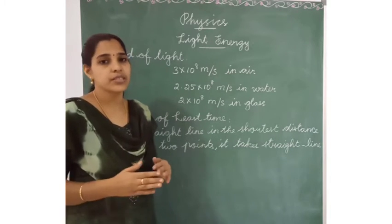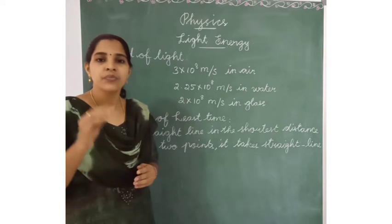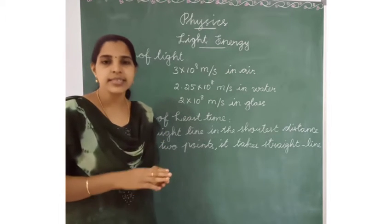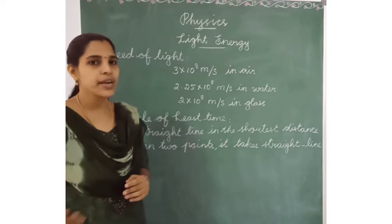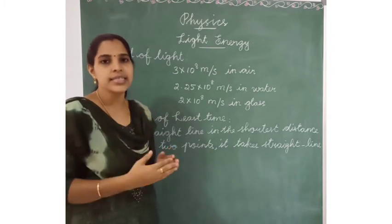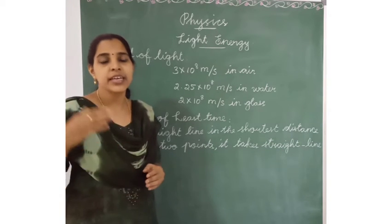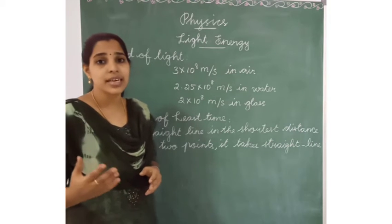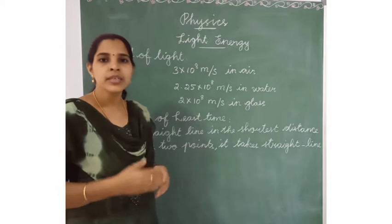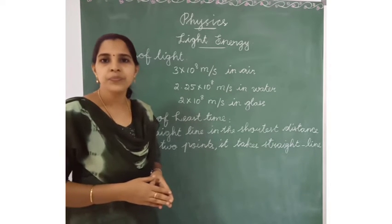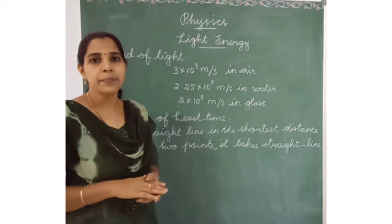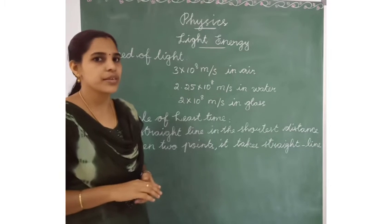In diffuse reflection, the law of reflection does not apply. What is the law of reflection? The first law of reflection is that the angle of incidence is equal to the angle of reflection. In regular reflection we consider the law of reflection, but not in diffuse reflection. The second law of reflection states that the incident ray, the reflected ray, and the normal all lie in the same plane at the same point of the surface.